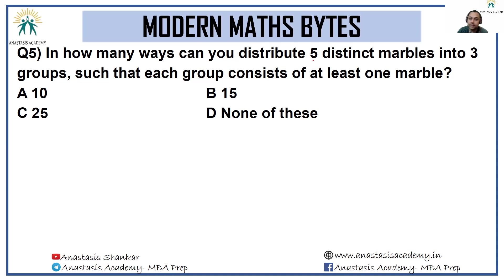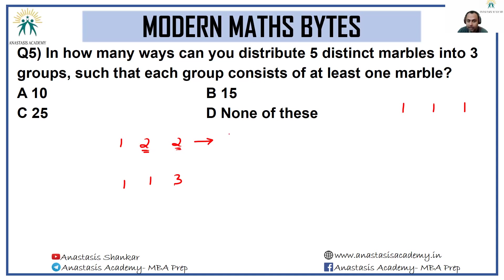Next question: in how many ways can you distribute five distinct marbles into three groups such that each group has at least one marble? With five distinct items into three groups, this can only be done as 1-2-2 or 1-1-3. The idea is: first give one marble to each group, leaving two marbles. Those two can either go to different groups or to the same group. To count the 1-2-2 case, identify which two marbles pair up — that's 5C2 — then identify which two of the remaining three pair up — 3C2.